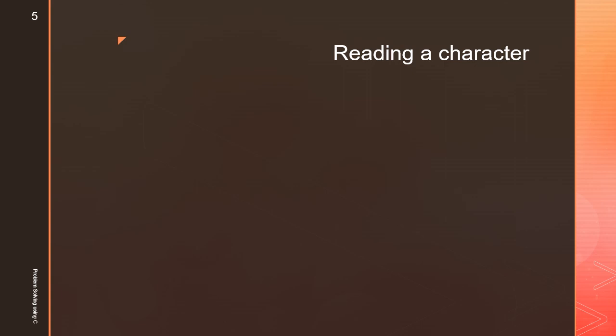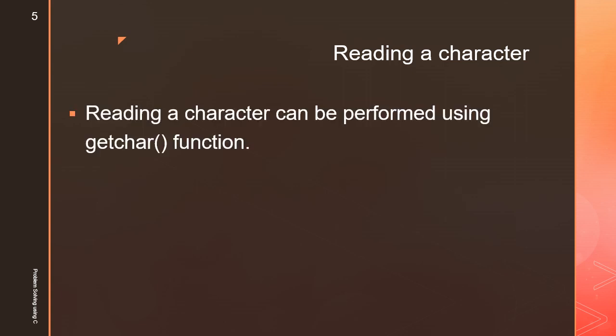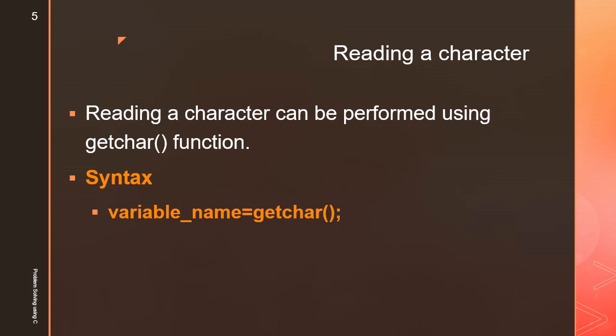To read a character from a keyboard using the C standard input/output function, reading a character can be performed using the getchar function. The syntax is: declare a char data type variable, then assign it using variable = getchar(); followed by a semicolon.